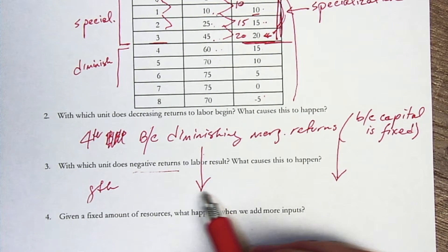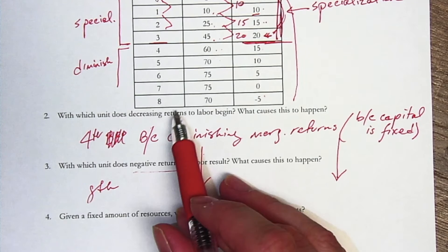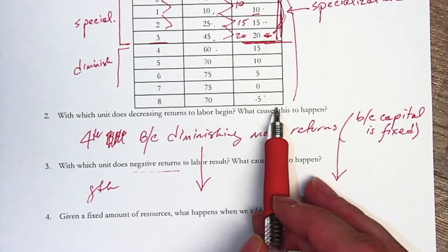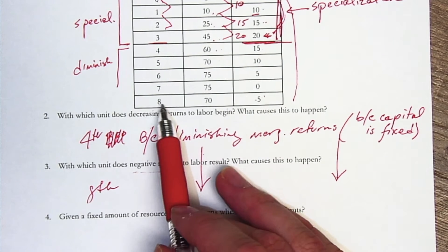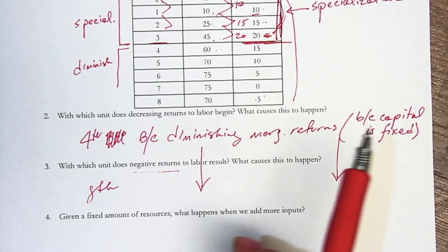There's some additional thought that you can put into this in thinking about that eventually the workers are starting to get into each other's way. They're starting to distract each other. That, in fact, adding that eighth worker reduces the amount of total product that can happen.